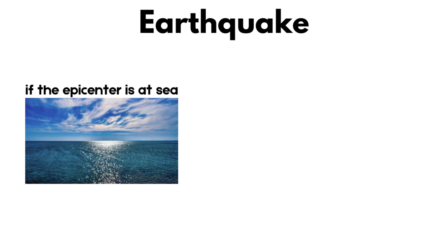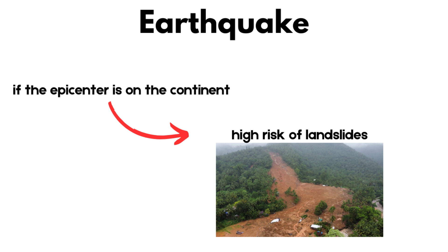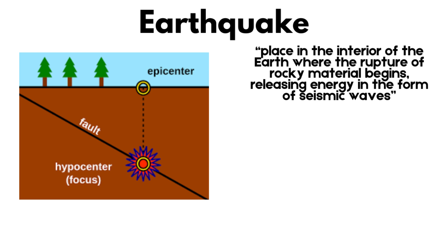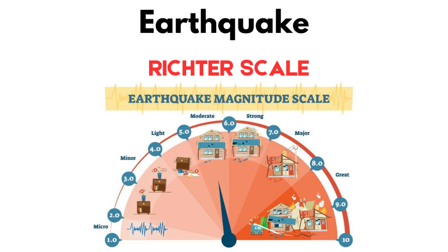When the epicenter of an earthquake is located at sea, the seabed can be displaced enough to cause a tsunami. Earthquakes can also trigger landslides. The initial rupture point of an earthquake is called the hypocenter or focus. The epicenter is the point on the Earth's surface directly above the hypocenter. The Richter scale is one of the most common ways to measure the intensity of an earthquake. Earthquakes of low magnitude, less than 4.0, are usually imperceptible or cause little damage. Moderate magnitude earthquakes, from 4.0 to 6.0, can cause localized damage.